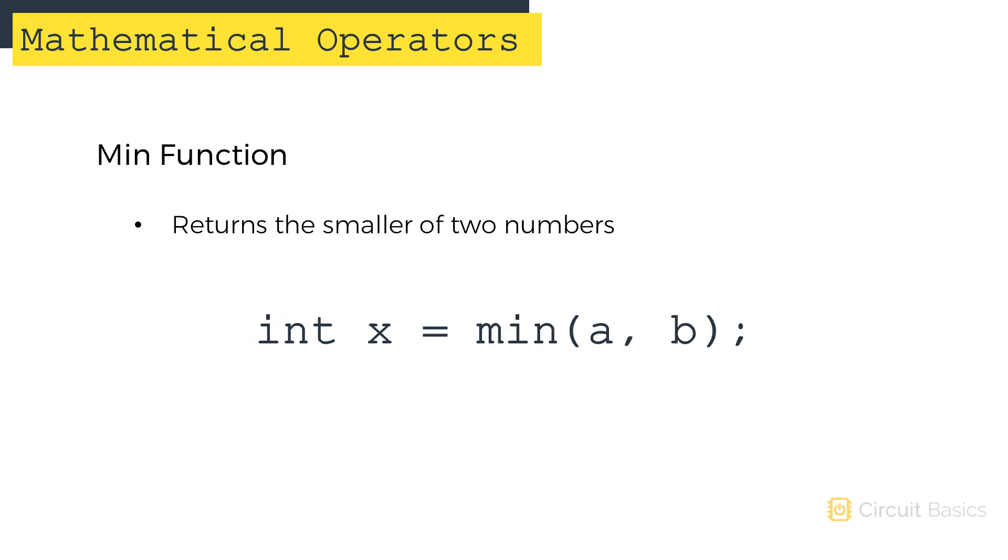We also have functions for min and max. Min calculates the minimum value of any two numbers. The function returns the smaller of the two values. A and B can be any data type. Max calculates the maximum value of any two numbers. The function returns the larger of the two values. Like min, A and B can be any data type. Min and max are useful for keeping values above or below a certain threshold.